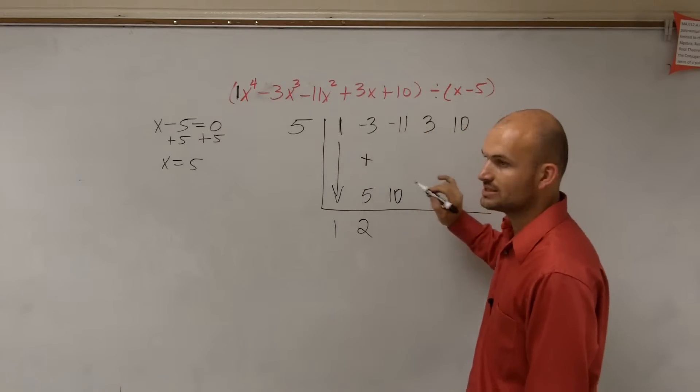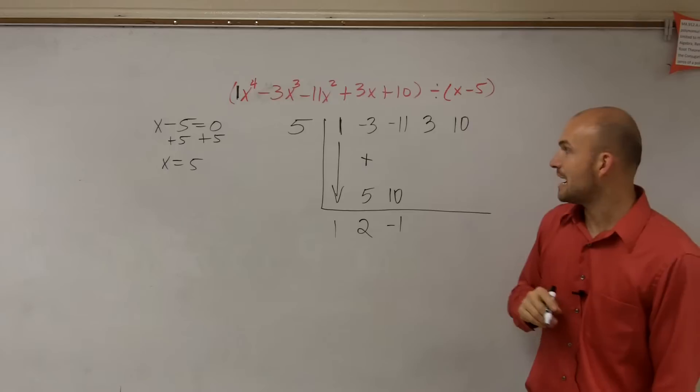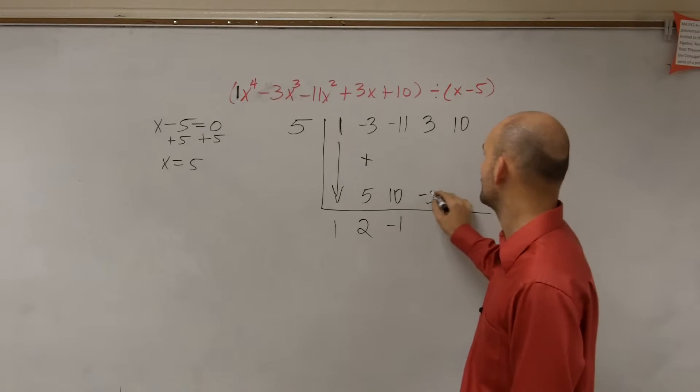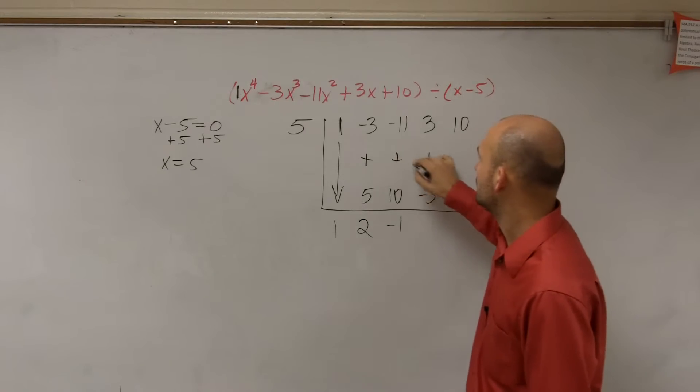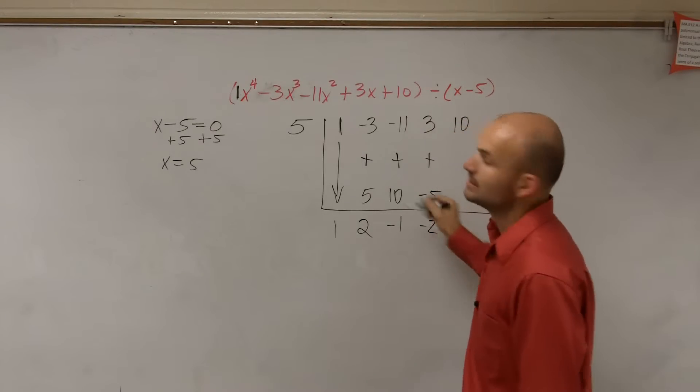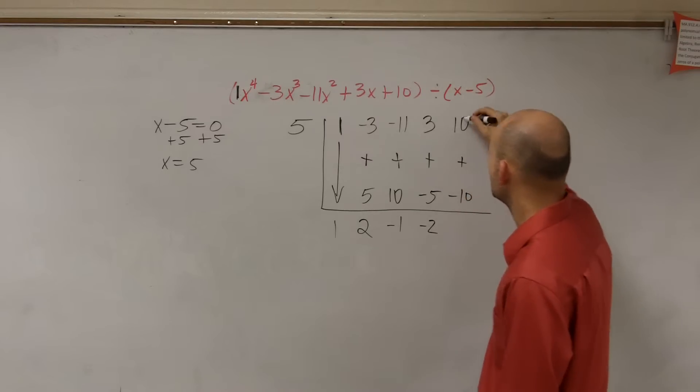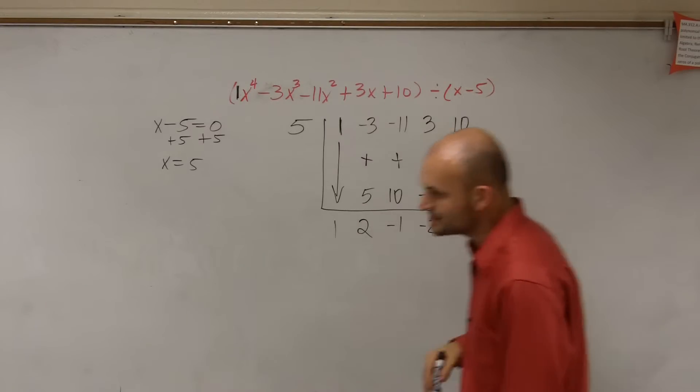Negative 11 plus 10 is negative 1. Negative 1 times 5 is negative 5. 3 plus negative 5 is negative 2. Negative 2 times 5 is negative 10. 10 plus negative 10 is 0.